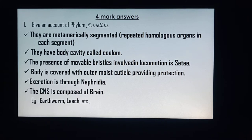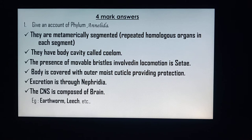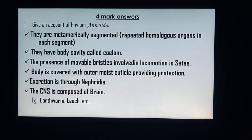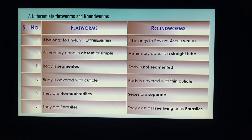The body of annelids is covered with a moist cuticle, which provides protection. Excretion in these animals is through a special organ known as nephridia. The central nervous system is composed of a brain.